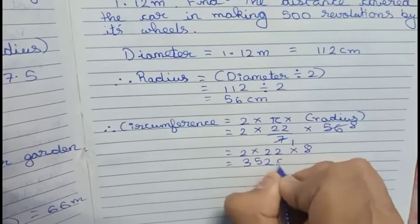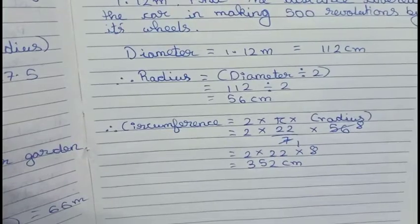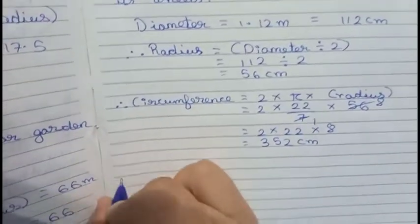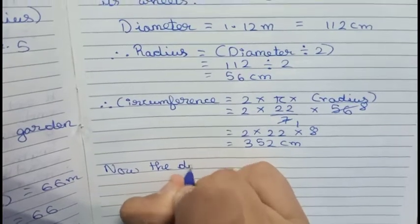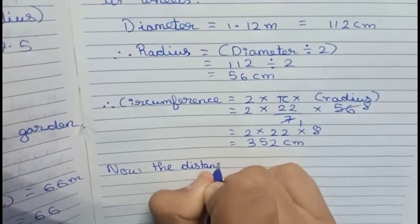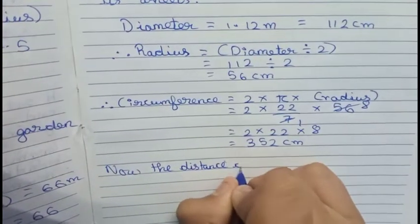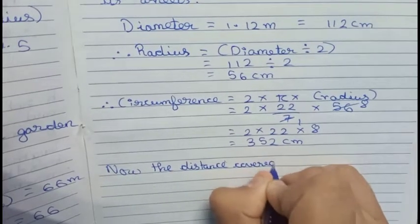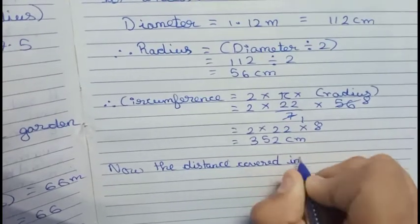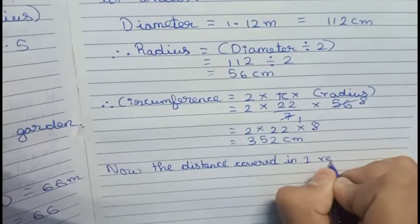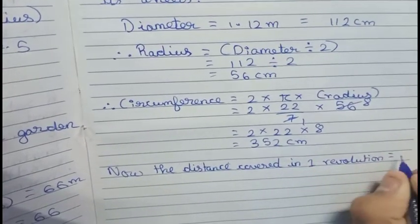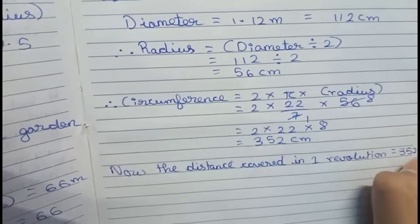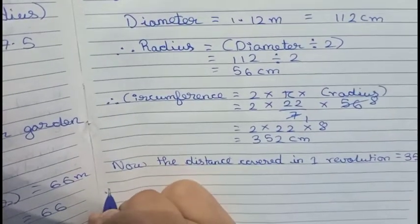So this is our circumference. Now I write our statement: the distance covered in one revolution is 352 centimeters. Therefore the distance covered in 500 revolutions.